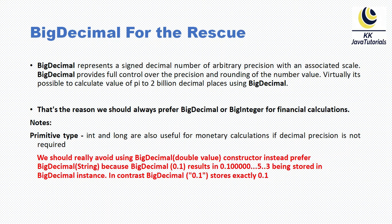One important thing to keep in mind: we should really avoid using the BigDecimal constructor which accepts a double value. Instead, prefer the BigDecimal constructor which accepts a String data type, because using the BigDecimal double constructor will result in some unpredictable results. That will not represent the exact amount in memory. So we should always prefer BigDecimal which accepts a String as an argument, which will store data as-is in memory.